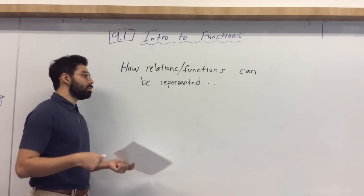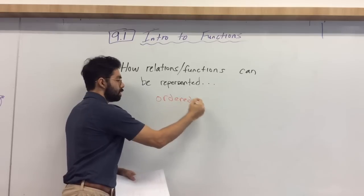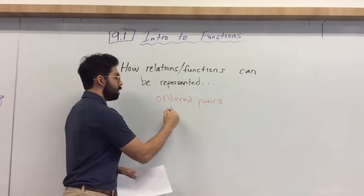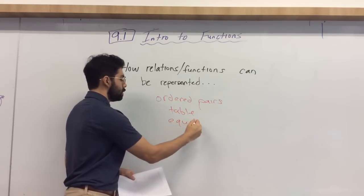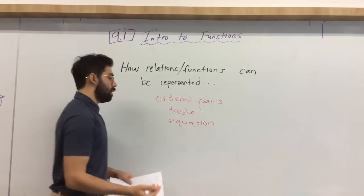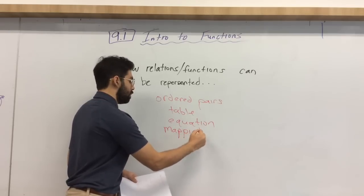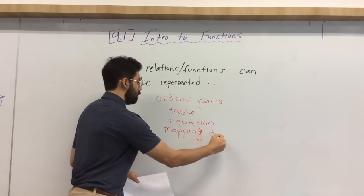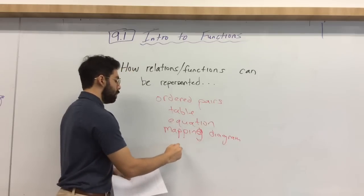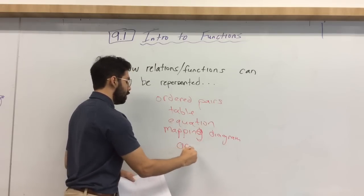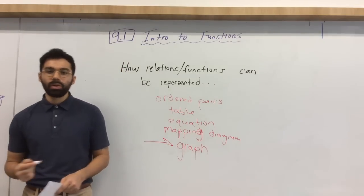And to relate back to the last video, how we can represent relations and functions. Well, that could be a number of things. So remember, that could be ordered pairs, which we talked about last time. That could be a table. It could be an equation, the mapping diagrams that you saw last time, or they could be represented in a graph. Okay, so that is what we are going to focus on today.